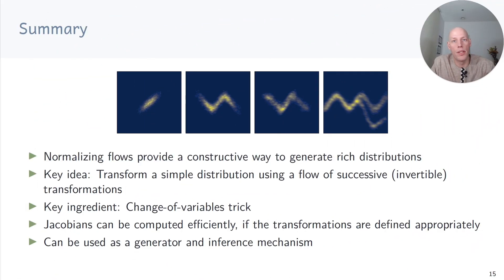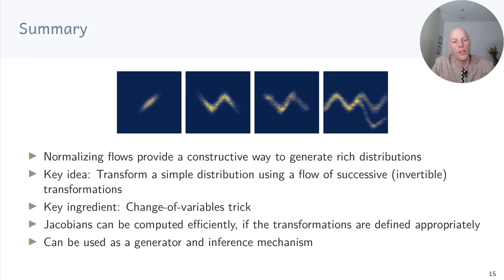To summarize: normalizing flows are a constructive way to generate rich distributions. The key idea is to transform a simple base distribution using a flow of successive invertible transformations, with the change of variables trick as the key ingredient. Jacobians can be computed efficiently if the transformations are defined appropriately. Normalizing flows can be used for data generation and as an inference mechanism.